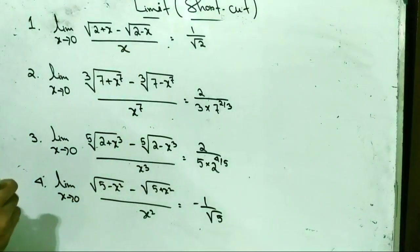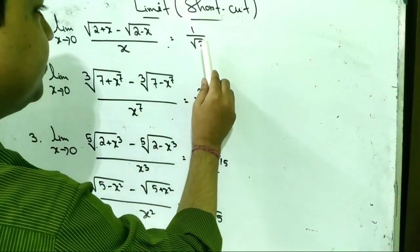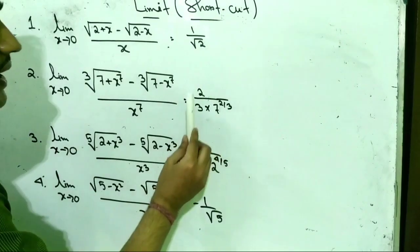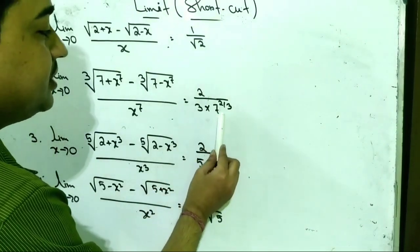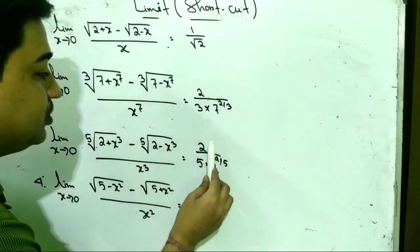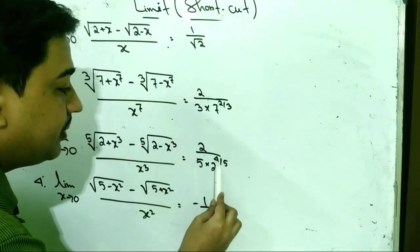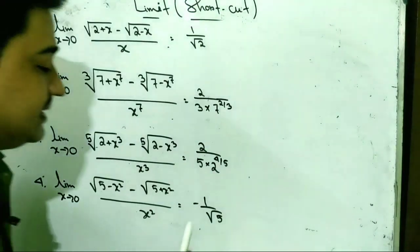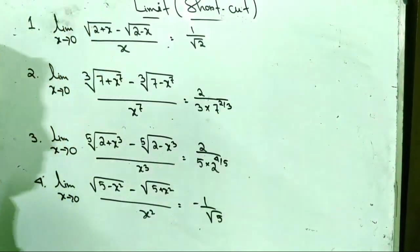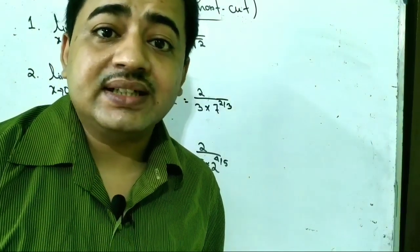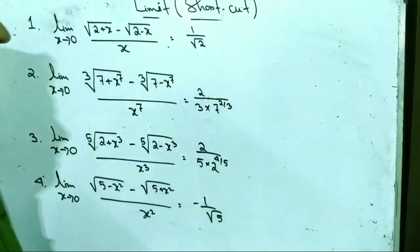The first limit's answer is 1 by root over 2. The second limit's answer is 2 by 3 into 7 to the power 2 by 3. Similarly, the third limit's answer is 2 by 5 into 2 to the power 4 by 5. And the last limit's answer is minus 1 by root over 5. All these limits were solved in 3 seconds.